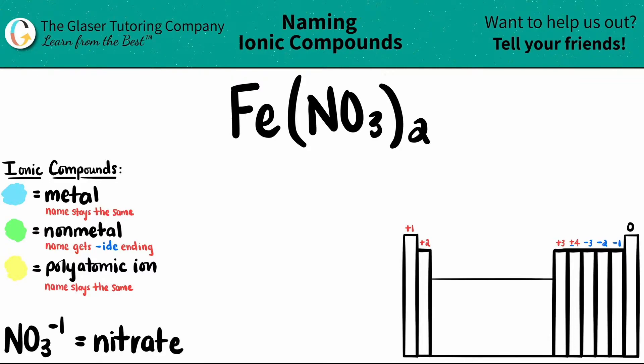Today we are going to be naming the ionic compound Fe(NO3)2. Just know that any time you have three or more elements in your ionic compound, you have a polyatomic ion.